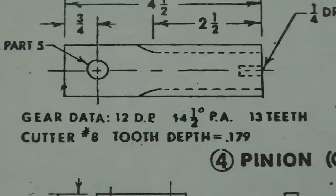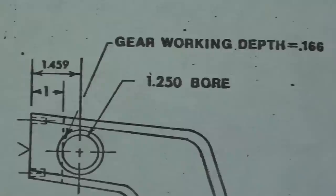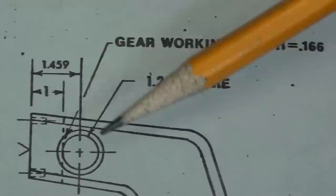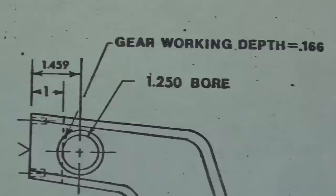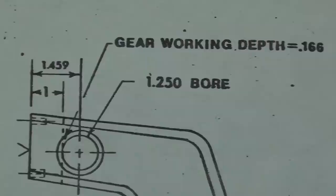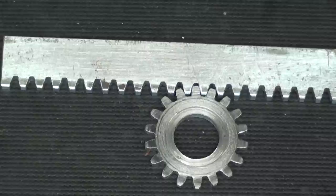Similarly, for the pinion, it was also 12 dimensional pitch, 14 and a half degree pressure angle, 13 teeth, which means they used cutter number 8, and the tooth depth was 179 thousandths. And all the math was worked out here for them as well, telling them to bore it out one and a quarter inch, and that the working depth of the gear is 166 thousandths, and there were the dimensions for them to do all of that work. And yes, there were a lot of failures on that, kind of a difficult job for a high school boy.